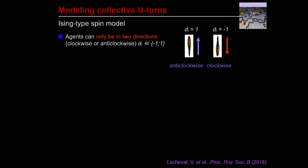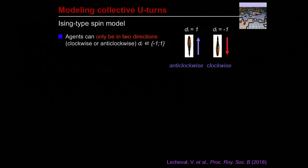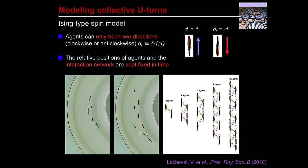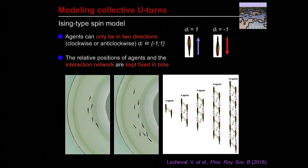In this simple model, each fish is represented by an agent that can only move in two directions: clockwise (direction minus one) or anticlockwise (direction plus one). The relative positions of individuals and the interaction network are kept fixed — a simplification justified by the fact that during the few seconds before a U-turn, the topological structure of the group doesn't change much, particularly for the fish at the front of the group.